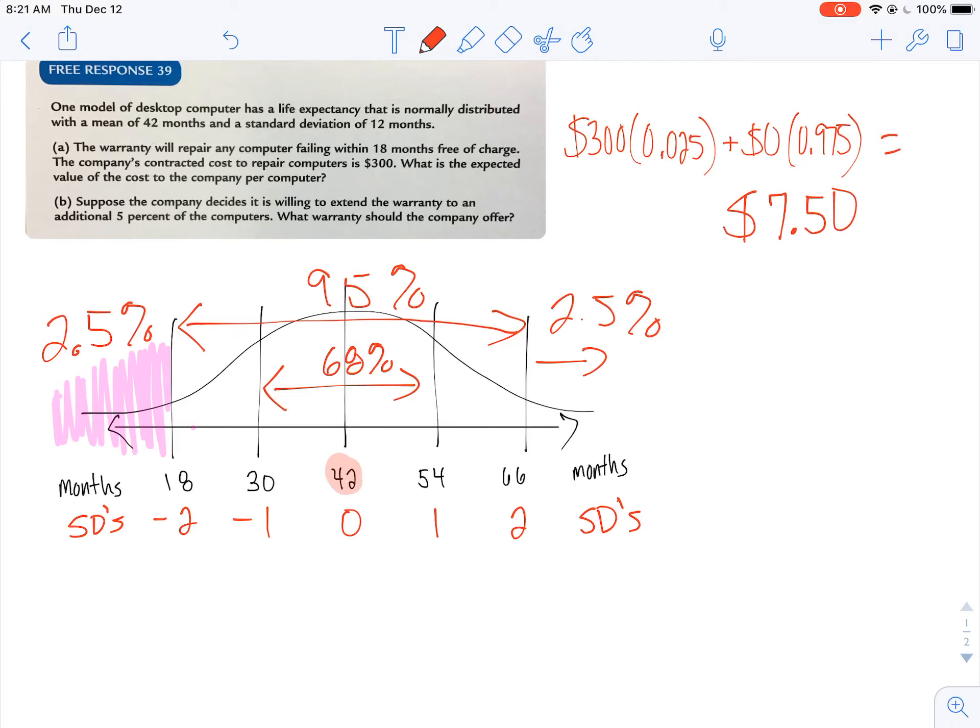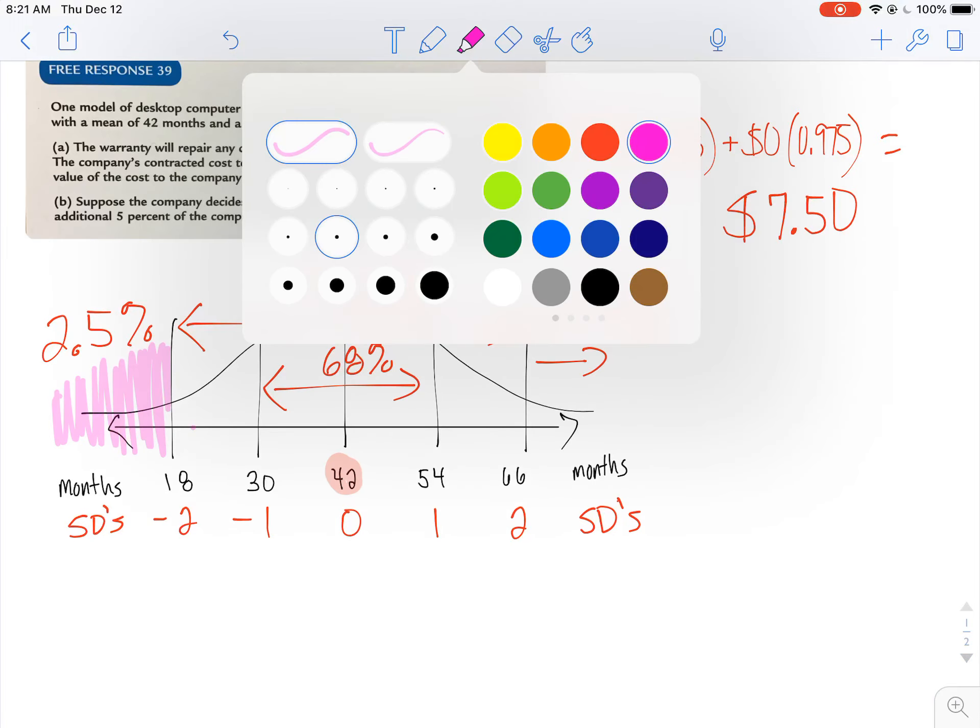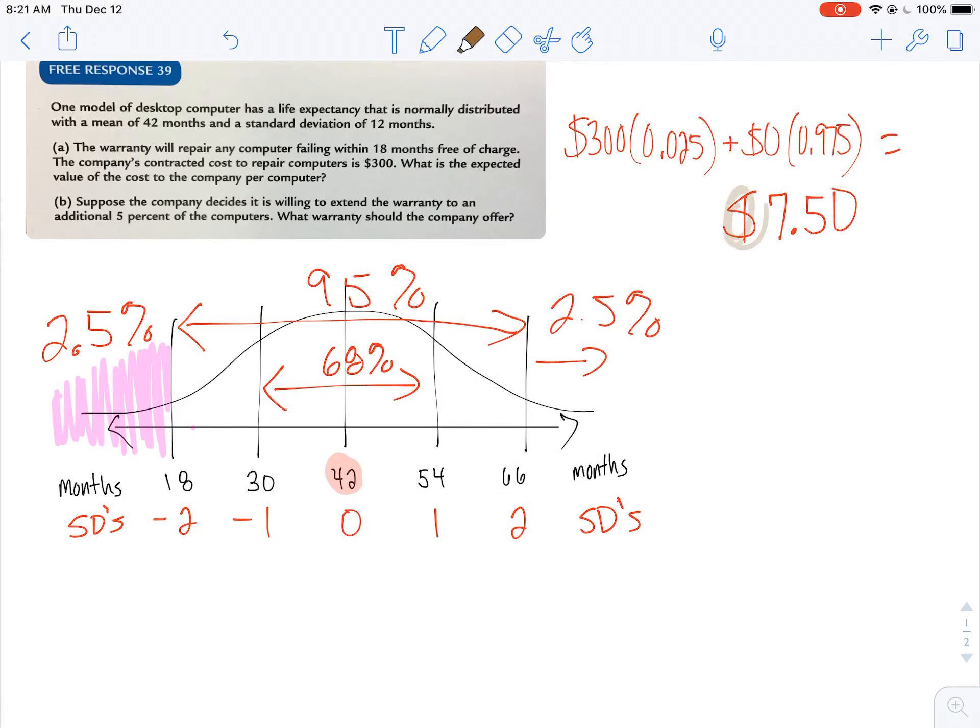Now, ultimately, they're not paying that per computer. What they're doing is they're only paying for computers that break. But this represents about how much they should expect when they sell a computer. Like, okay, $7.50 of this should probably go towards repairing future computers.